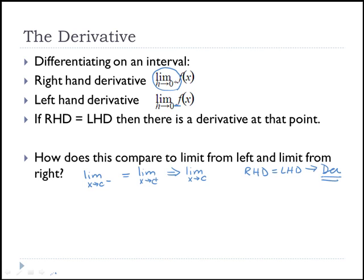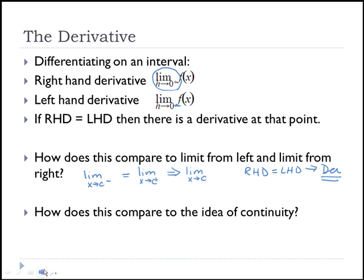If our function is doing something where things are not approaching the same slope from both sides, then we have no derivative — that's important to know if a function represents how a company is doing. This also ties into continuity: continuity requires not only a limit, but that the limit equals the function value. We'll revisit what it means when a derivative exists and how that connects to continuity.